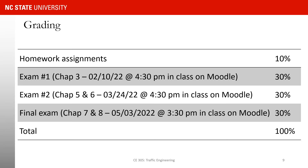For your final grade: 10% comes from homework assignments and 30% from each exam, adding up to 100%. Exam one covers only chapter three and is at 4:30 p.m. in class via Moodle — you'll need to bring your laptop or tablet. Exam two covers chapters five and six. The final exam covers chapters seven and eight and will be at 3:30 p.m. in class via Moodle.